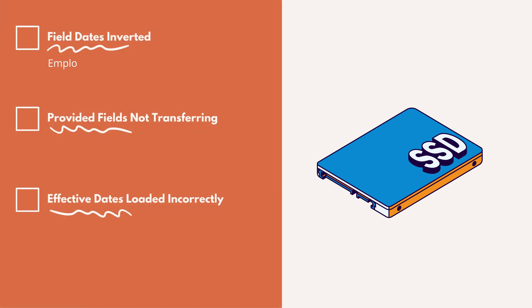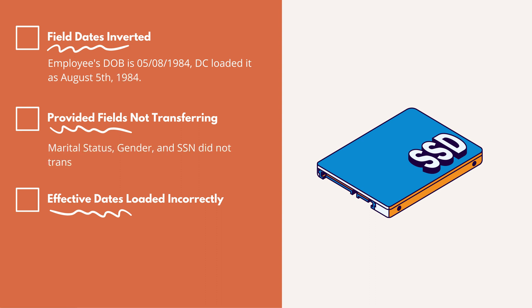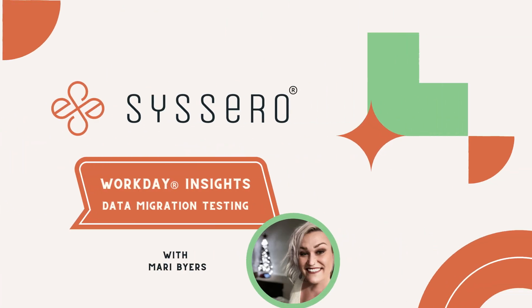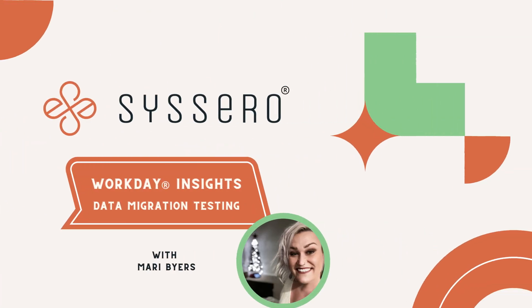During the validation process, you should track and document any issues that arise and work with the appropriate technical teams to resolve them. Once all the issues have been addressed, a final data migration testing should be conducted to ensure all the data has been migrated accurately and completely. Conducting data migration validation as part of your pre-implementation process ensures a smooth transition to your new Workday environment with minimal disruption of your Workday operations.